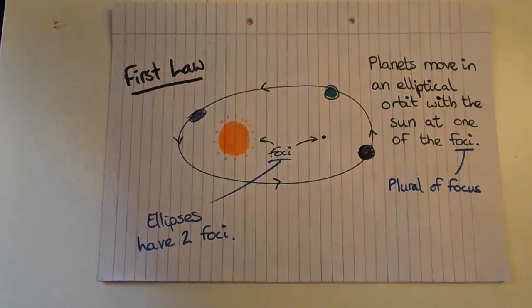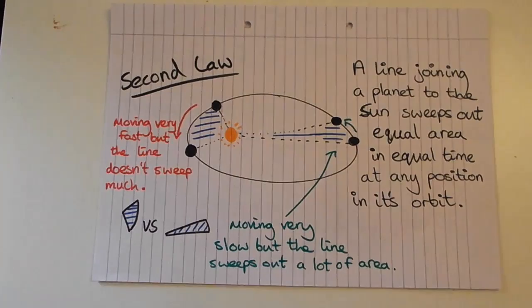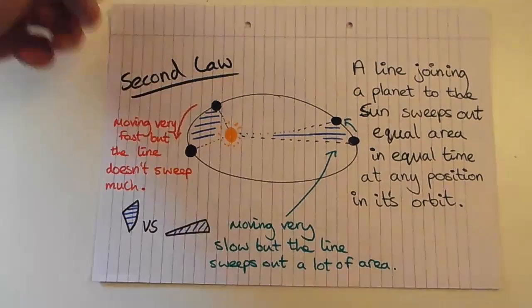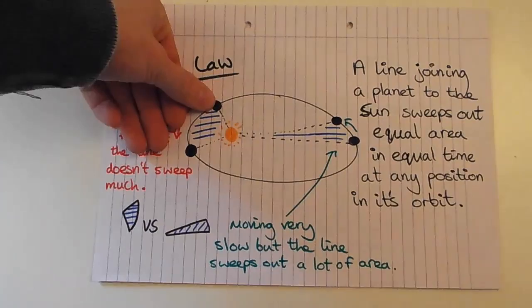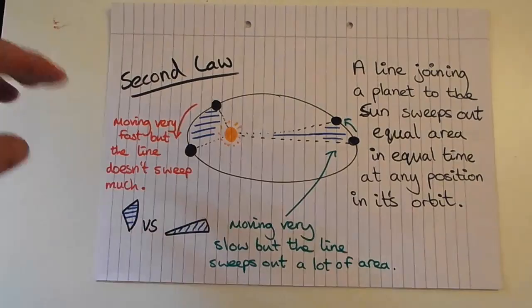His second law is that a line joining a planet to the Sun sweeps out an equal area in an equal period of time at any position in its orbit. So if our planet is very close to the Sun, it's orbiting at a much higher velocity. Although it's moving very fast, the line joining the Sun and planet isn't sweeping out much area — the shape swept out looks fat and short.